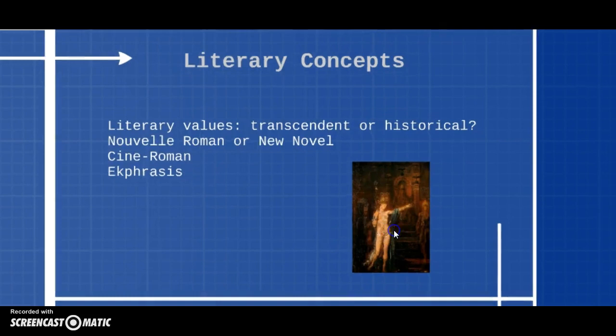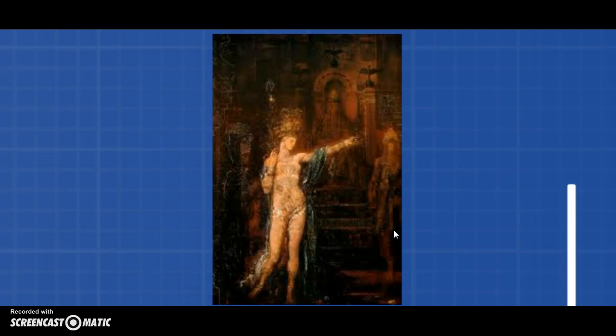And that's connected with our last word here, which is ekphrasis. So an ekphrasis is an artistic response to another piece of art, and this should look better. The resolution on this picture is kind of low. Anyway, this is a painting by a guy called Gustave Moreau, who was somebody who Robbe-Grillet really liked, and whose paintings have this kind of like sumptuous, decadent quality to them.